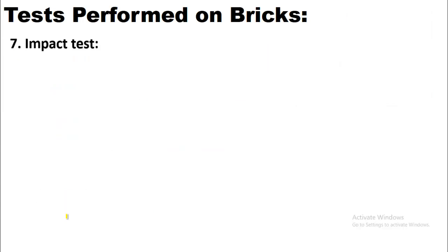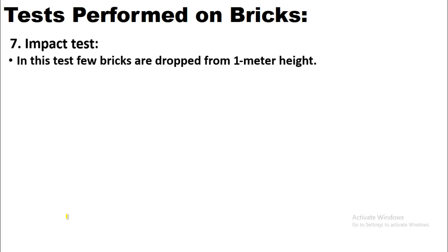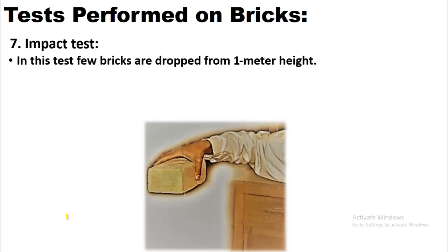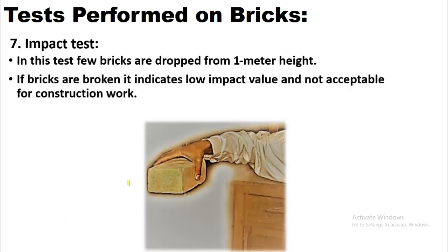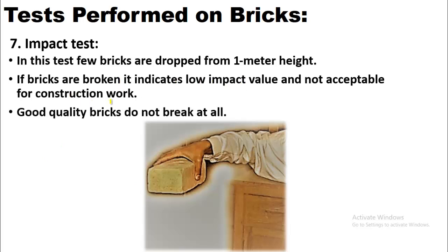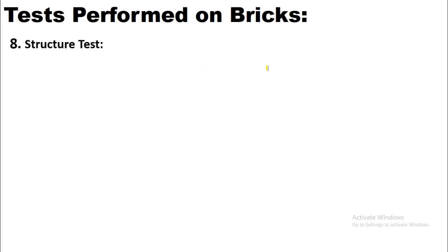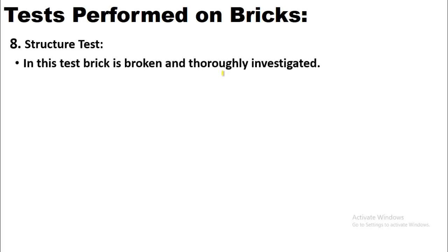The seventh test is the impact test, which can also be performed on site. A few bricks are dropped from one meter height. If bricks break, it indicates low impact value and they are not acceptable for construction. Good quality bricks do not break when dropped from one meter height. The eighth test is the structure test, also performable on site — a brick is broken and thoroughly investigated.